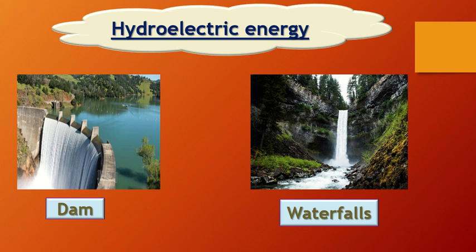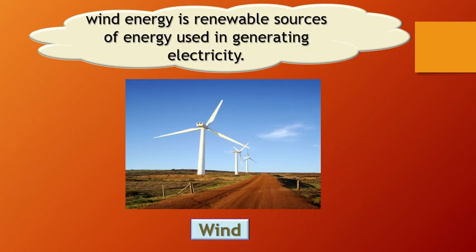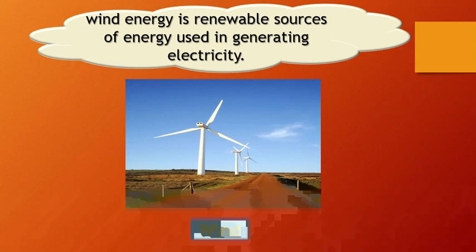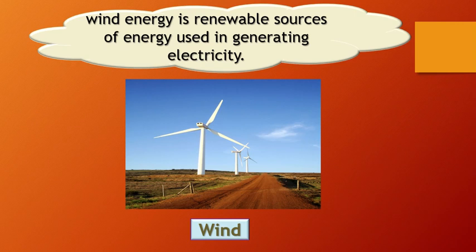Number two: we can generate electricity from wind using a structure called a turbine. We took the turbine inside the electric power station — it works like a fan. This turbine moves by the action of the wind.